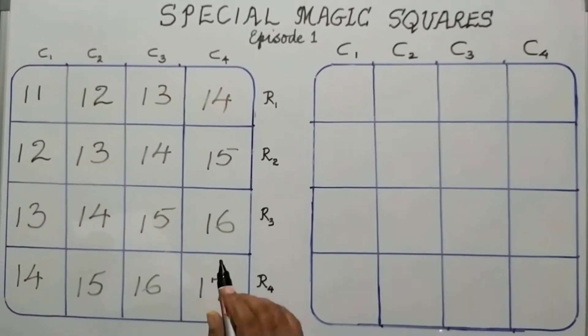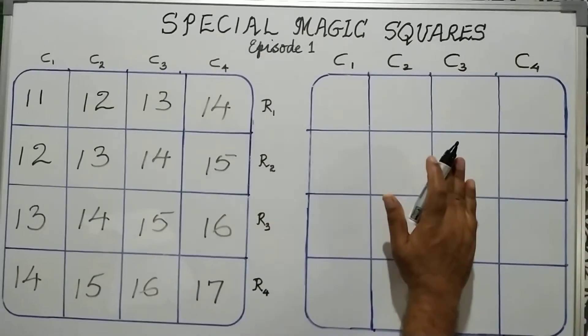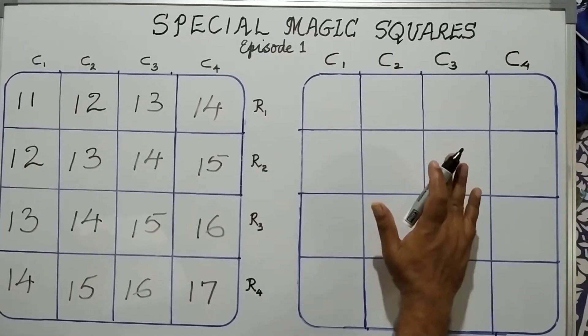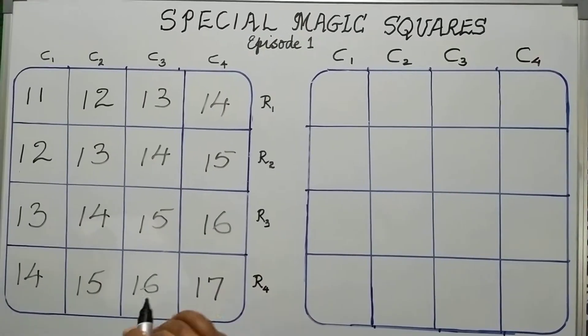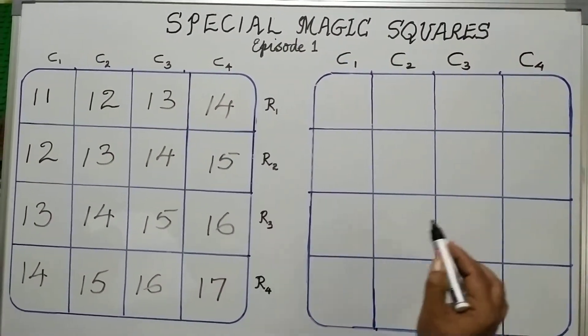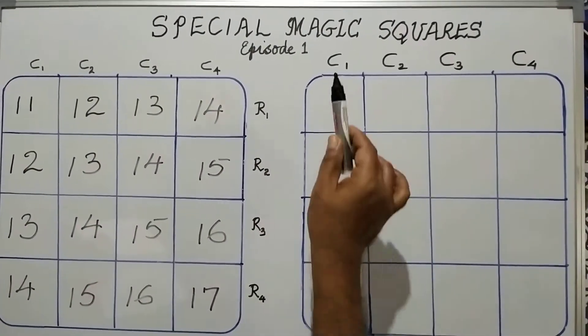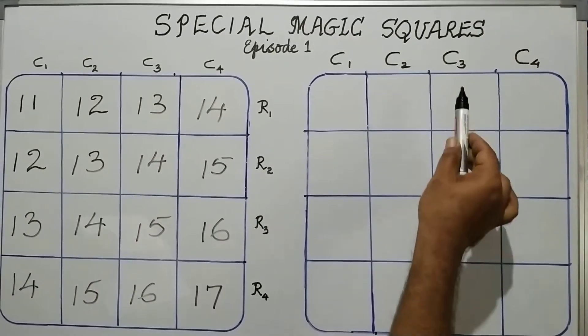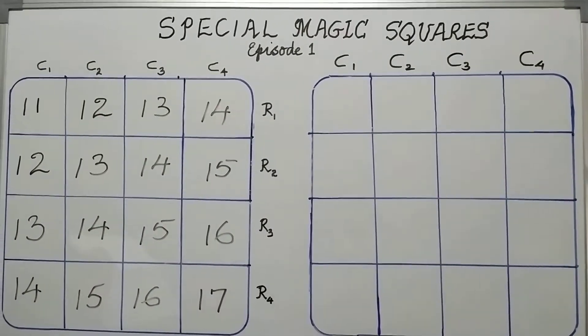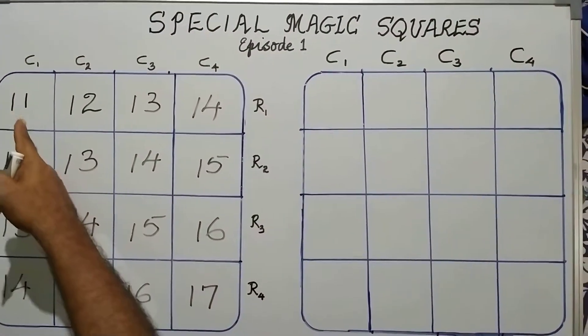Dear friends, this is the base square and this is the final special magic square that I am constructing. The number of rows are 4: R1, R2, R3, and R4. And we have 4 columns: C1, C2, C3, and C4.